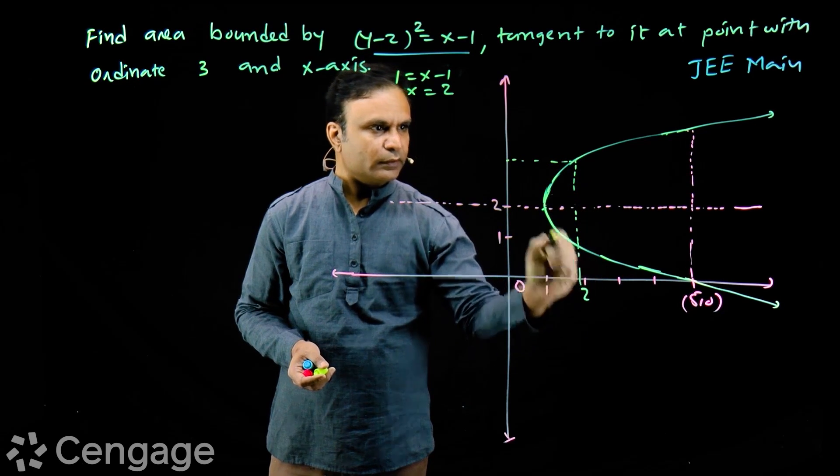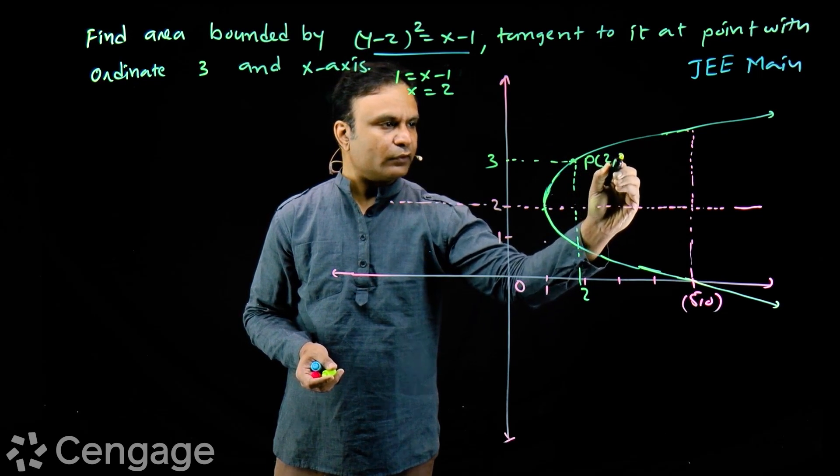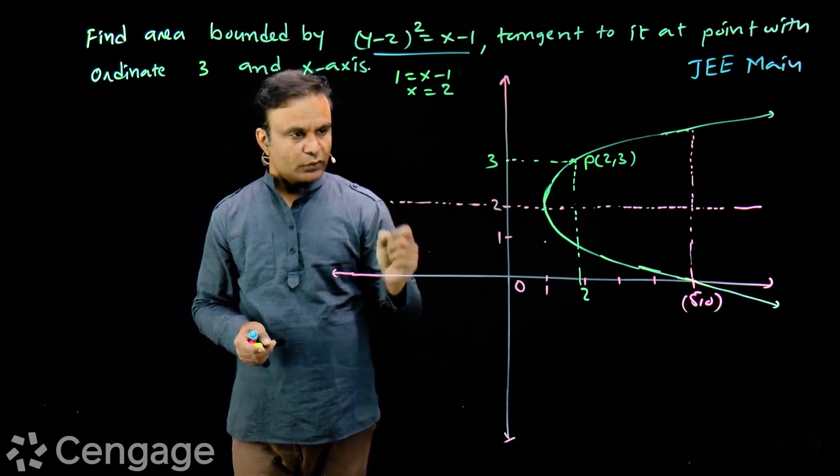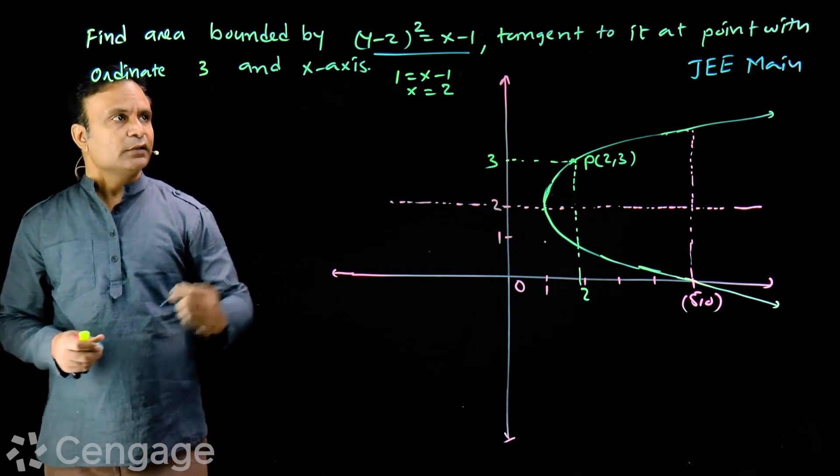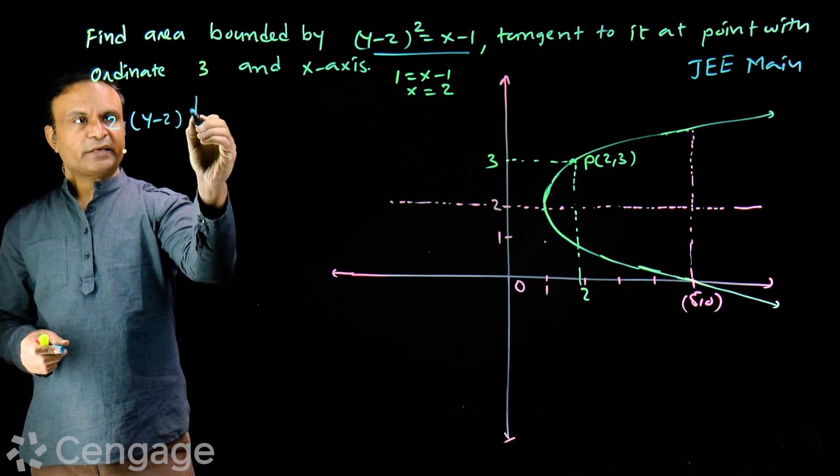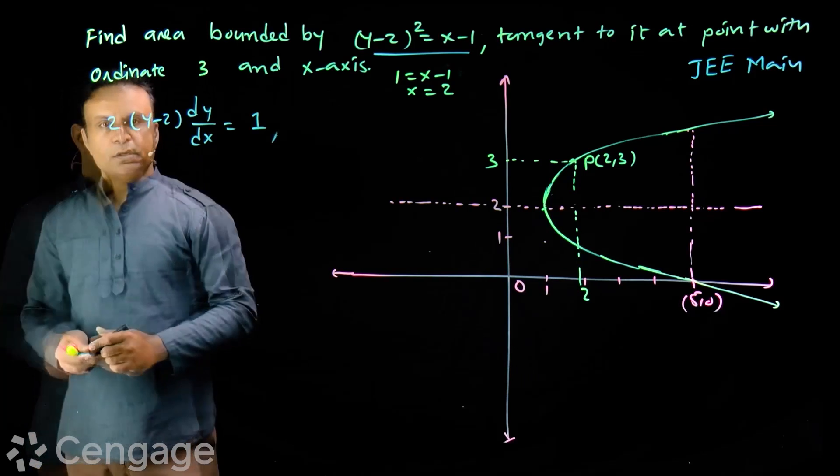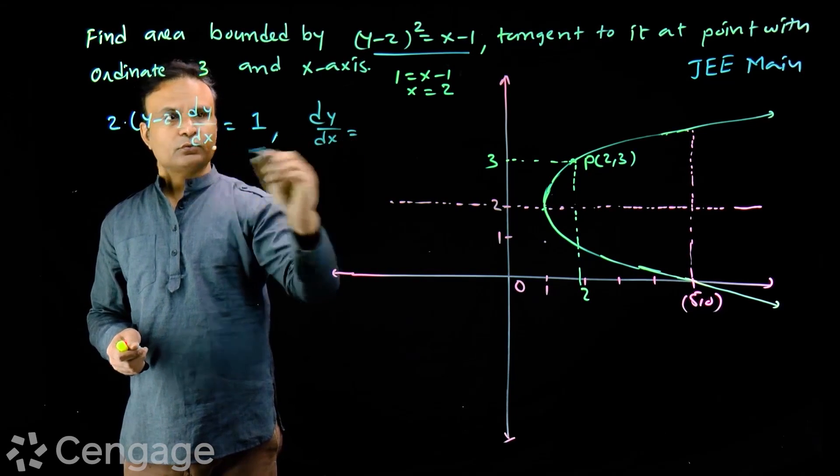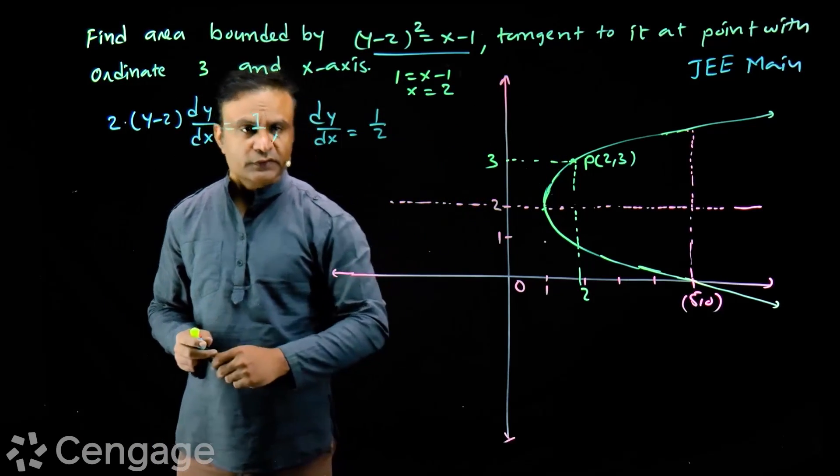At this point, suppose this is point P with coordinates (2,3), we draw a tangent. First we get the equation of the tangent. We differentiate the curve with respect to x: 2(y-2)(dy/dx) = 1. When I put y=3, I get dy/dx = 1/2. That means the slope of the tangent at this point is 1/2.